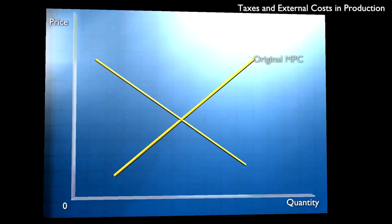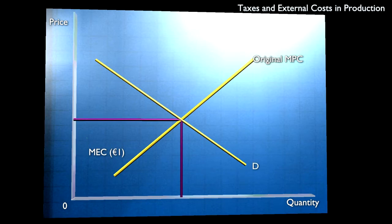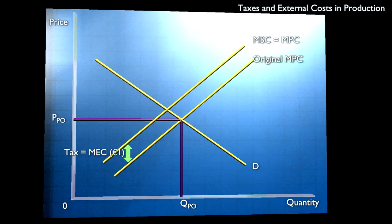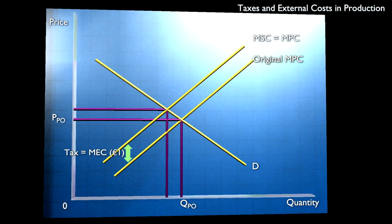In our previous example, the marginal external cost was 1 euro a unit. If we impose a tax on producers of 1 euro, the effect is to raise marginal costs and shift the supply curve until it coincides with the marginal social cost. The result is that output of each of the firms is reduced until marginal cost equals marginal revenue, and the level of output at which they maximise their own welfare is QSO.